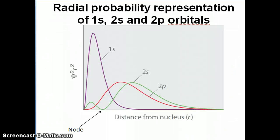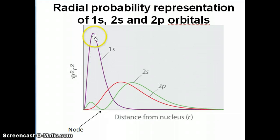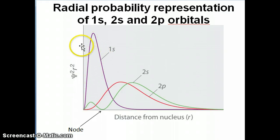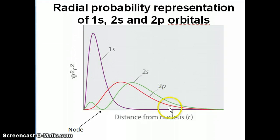Looking at the radial probability curves shown here — the same slide from the previous topic — for the 1s orbital, if you calculate the area under the 1s curve, you get a value fairly close to the nucleus, definitely closer than the 2s or 2p. Since the 1s electron's average location is closer to the nucleus compared to 2s or 2p, the 1s orbital is the lowest energy orbital.